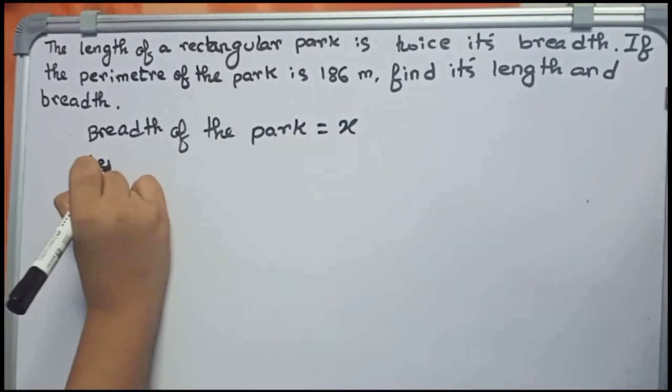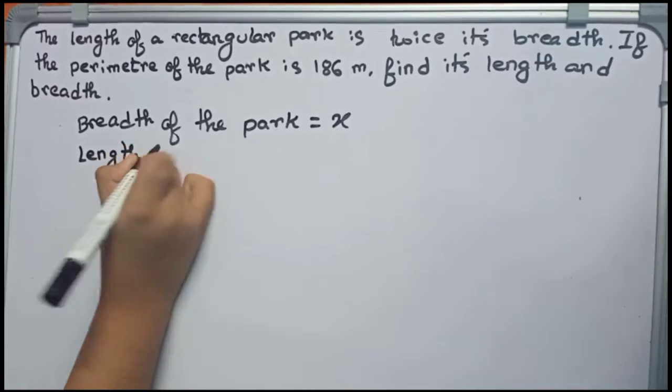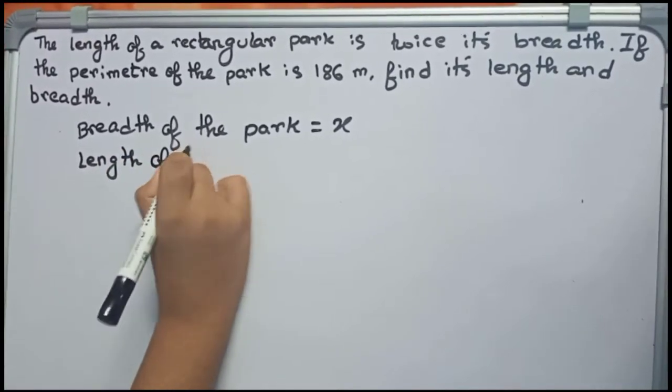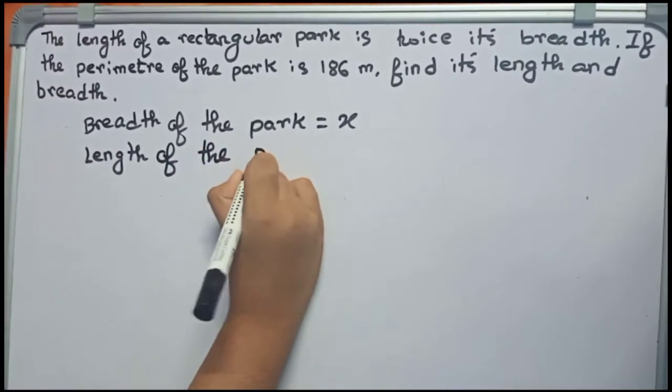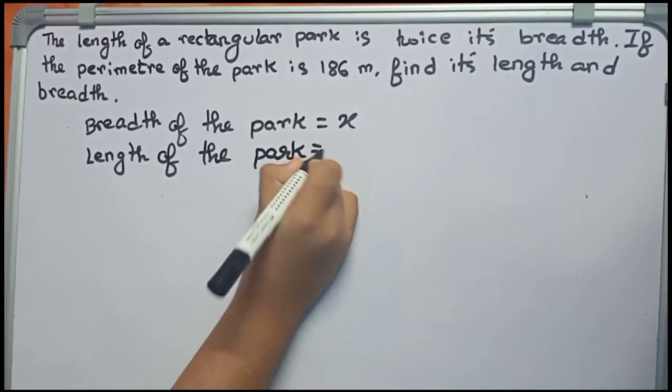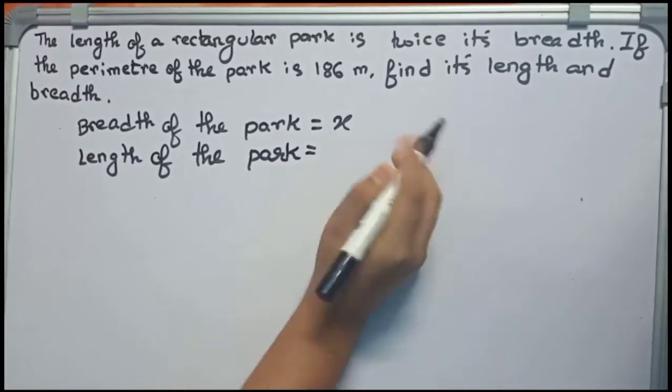Now we find the length. Length of the park - it is given that it is twice its breadth. Therefore, it will become 2x.